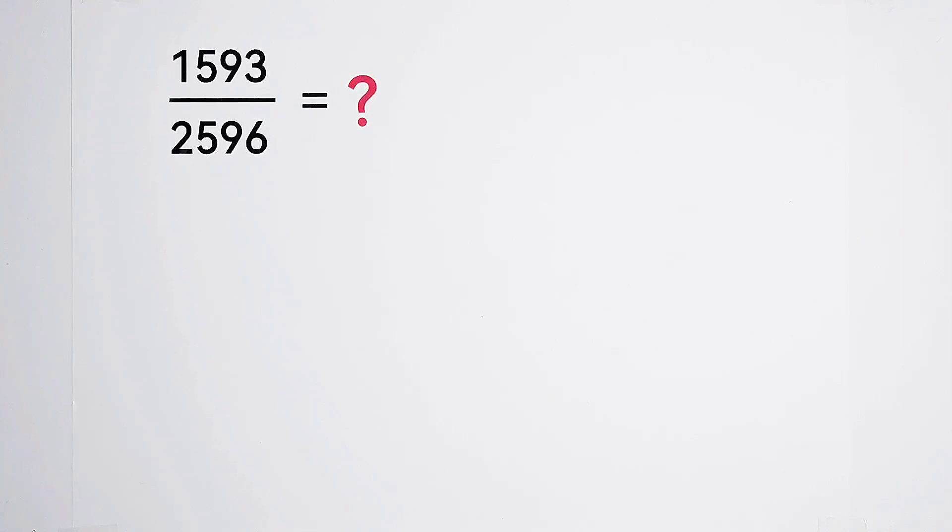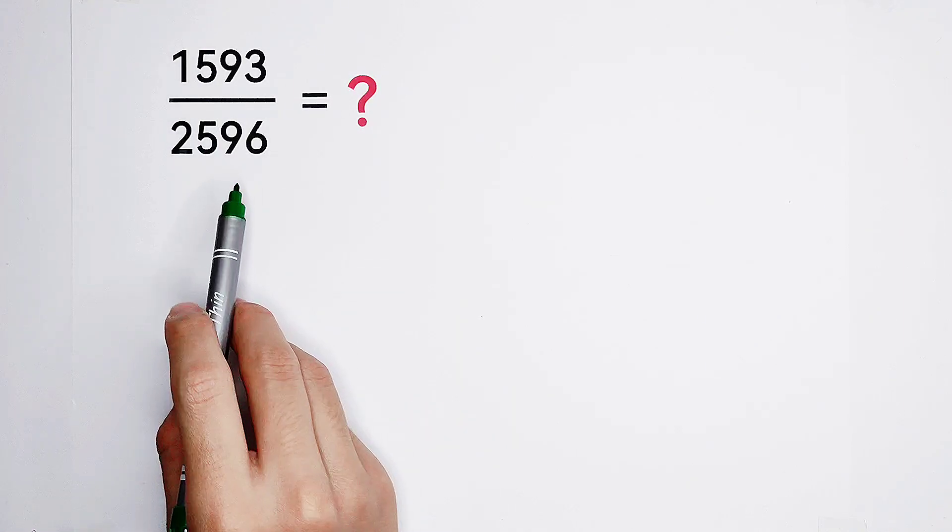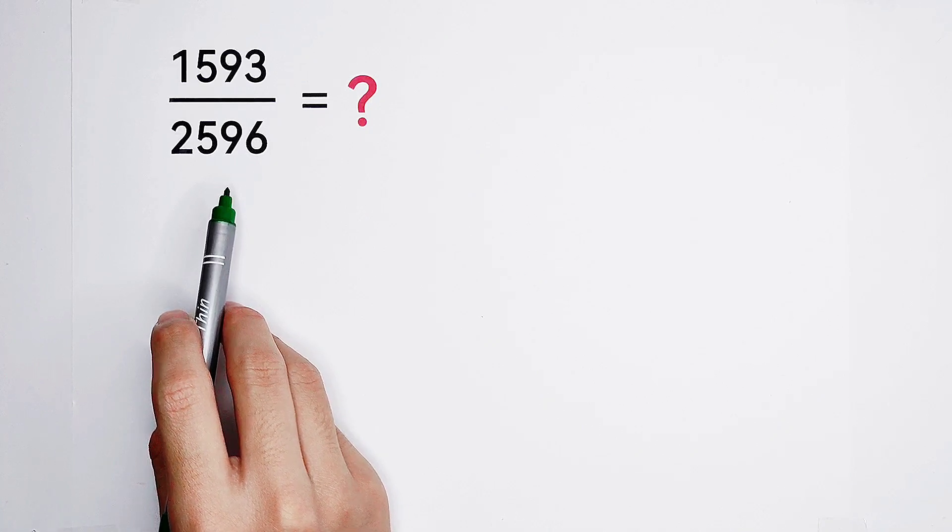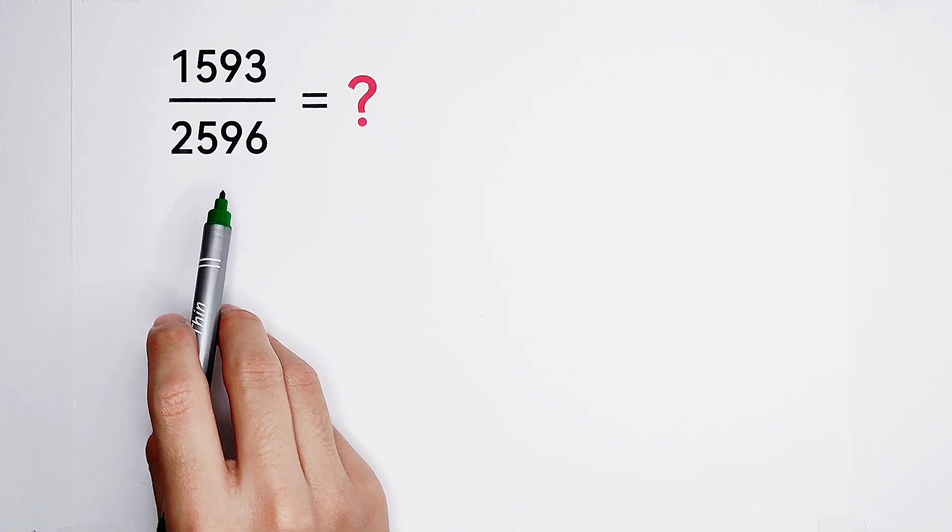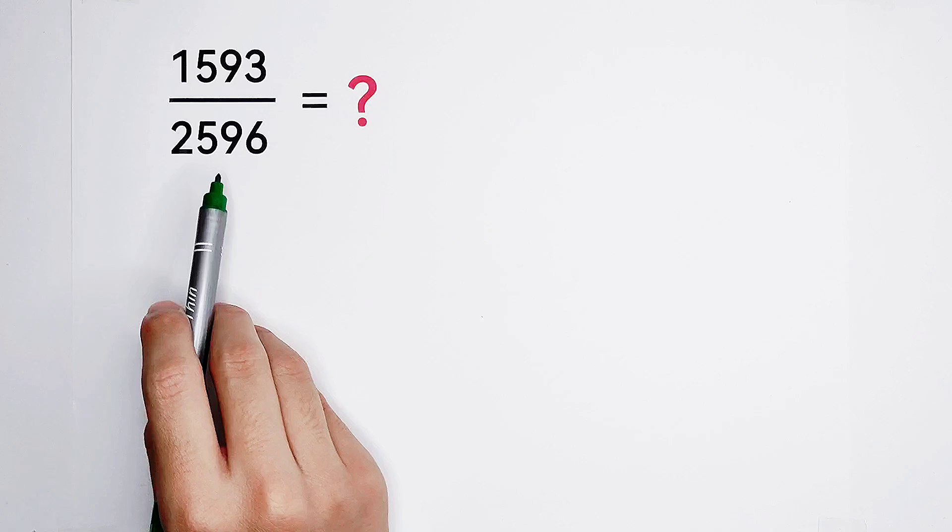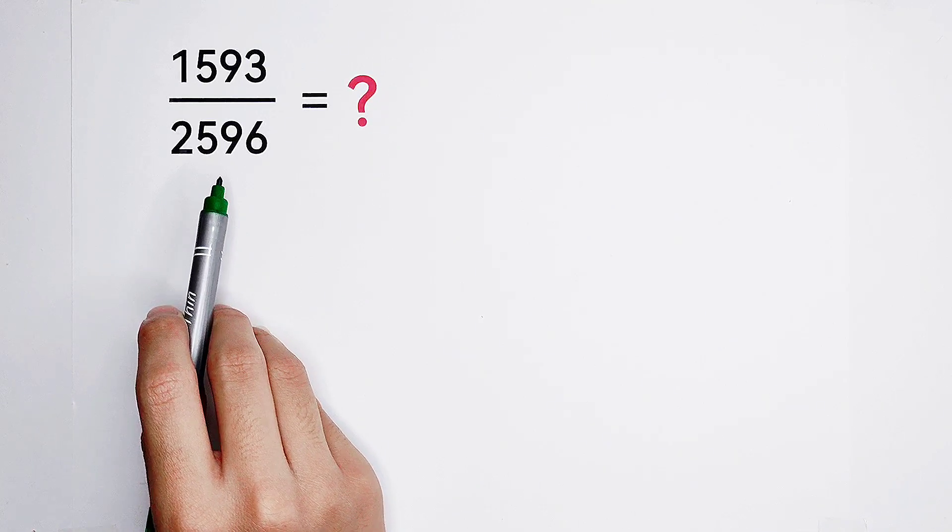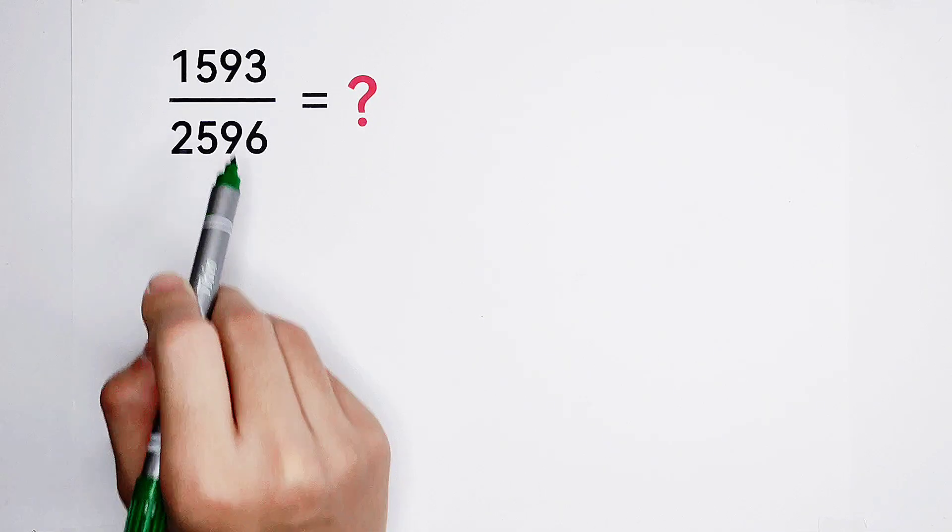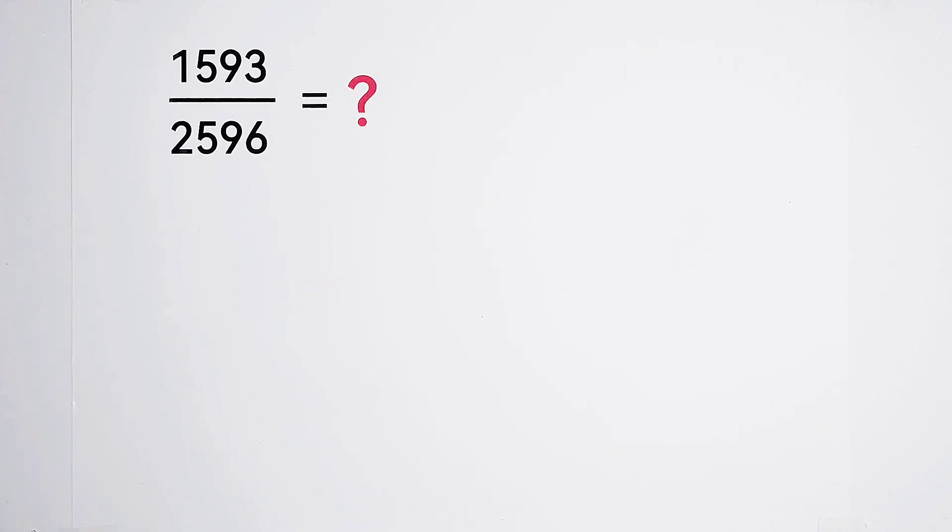How does it work? For simplifying this fraction, we should firstly find the greatest common divisor of the numerator and the denominator. So now, let's find the greatest common divisor of these two numbers, these two huge numbers.